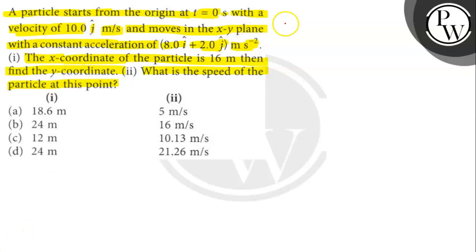The initial velocity of the particle u is 10 j cap meters per second. The acceleration of the particle a is 8 i cap plus 2 j cap.